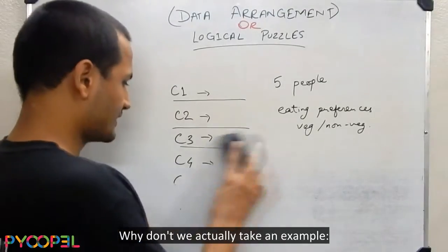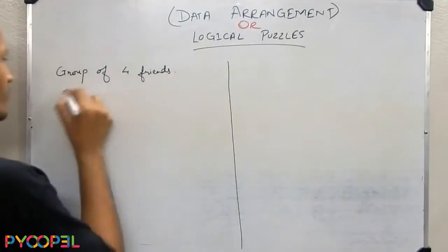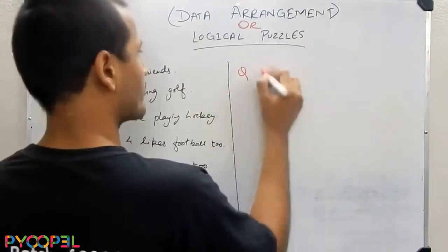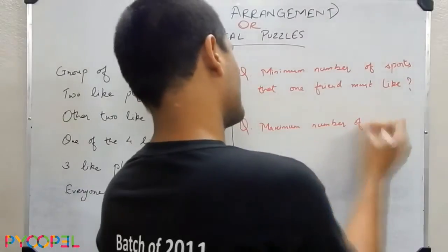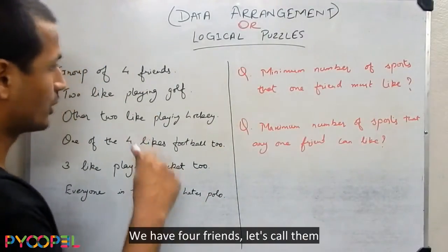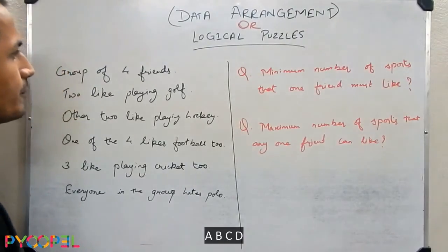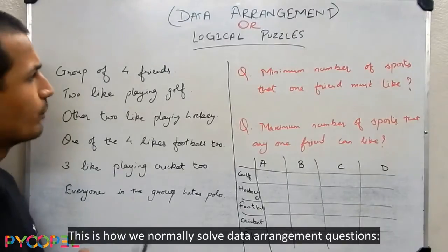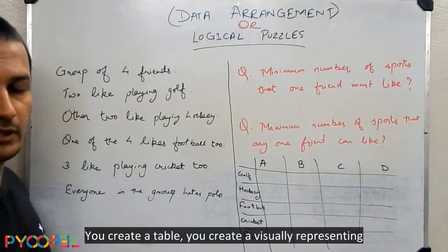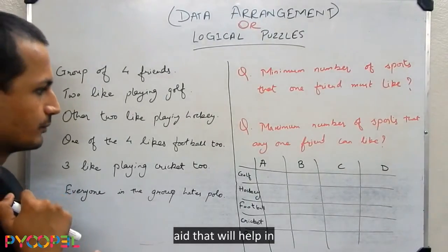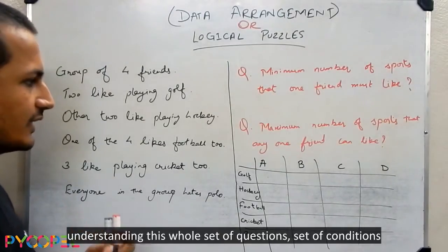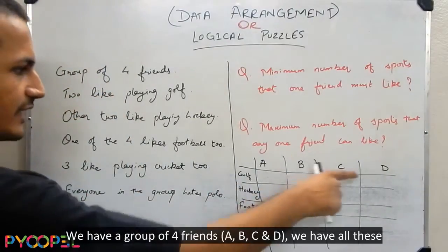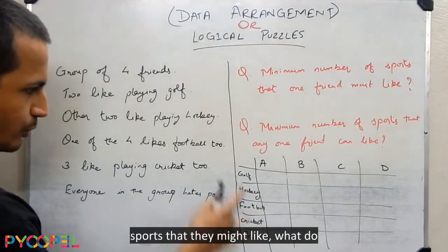Now let's actually take an example and solve this. We have four friends — let's call them A, B, C, D. This is how we normally solve data arrangement questions: you create a table, a visually representing aid that will help you in understanding the whole set of conditions in a visual way. We have a group of four friends A, B, C and D, and all these sports that they might like.